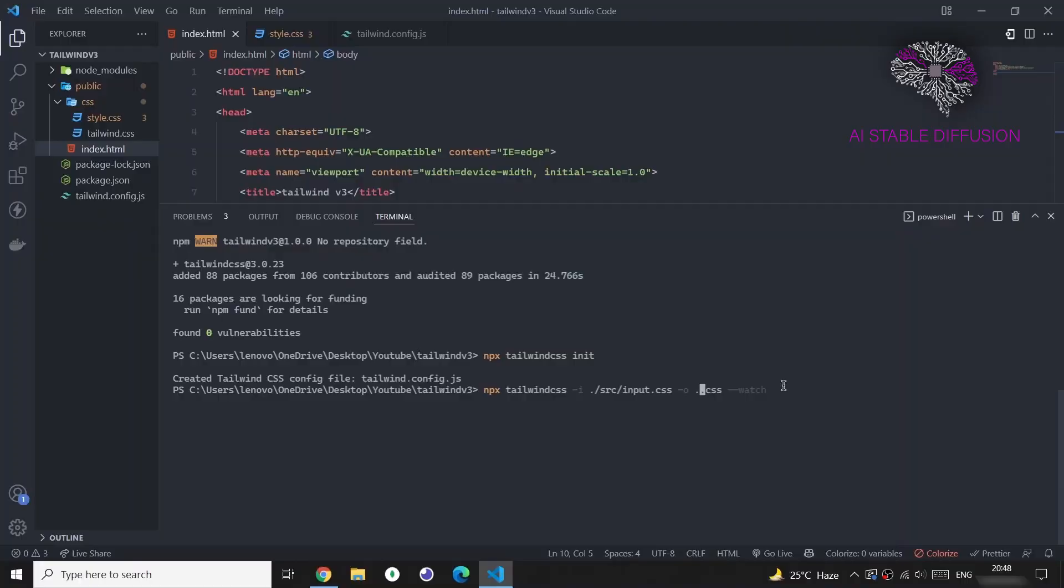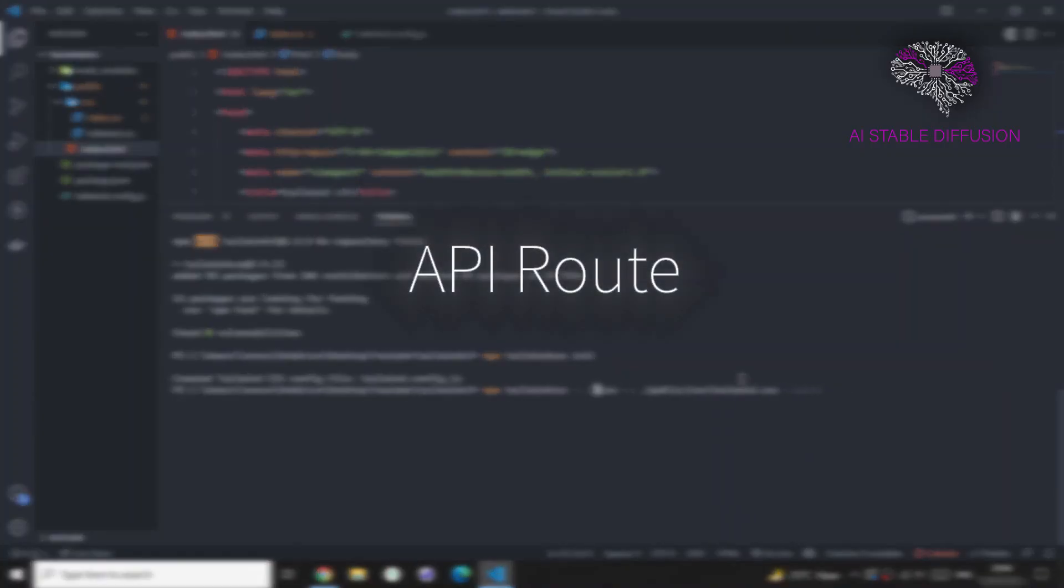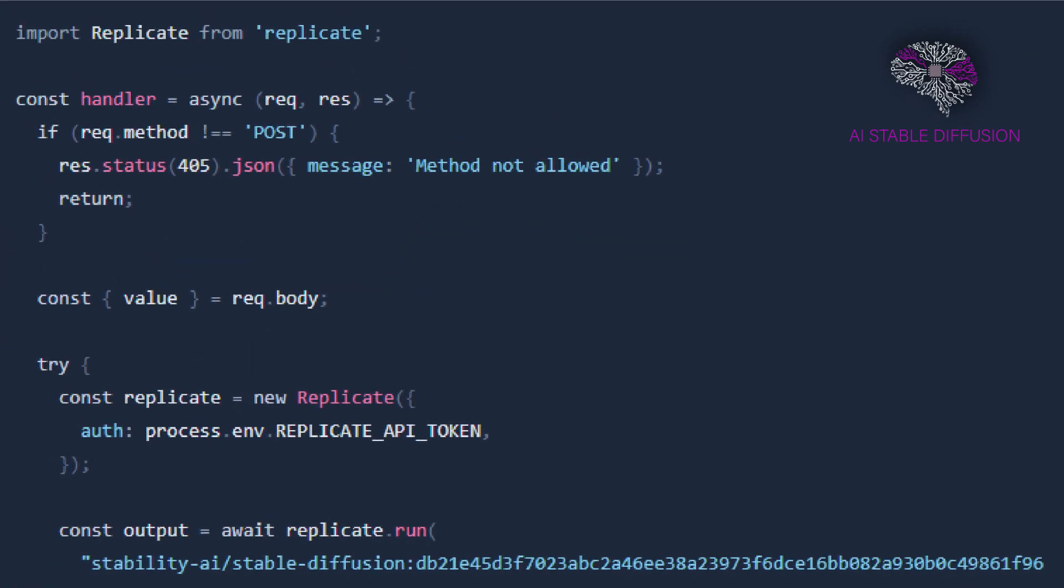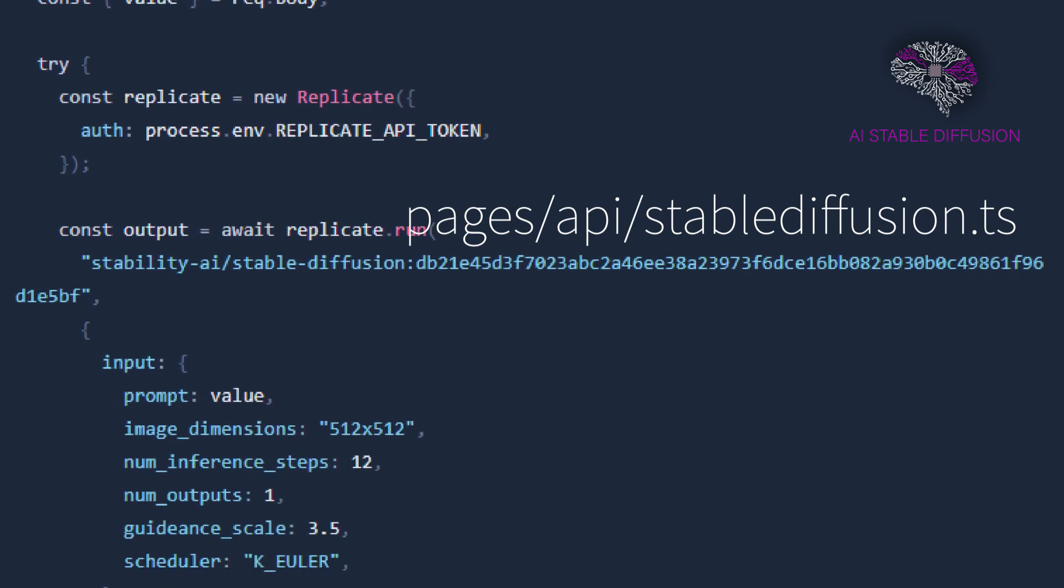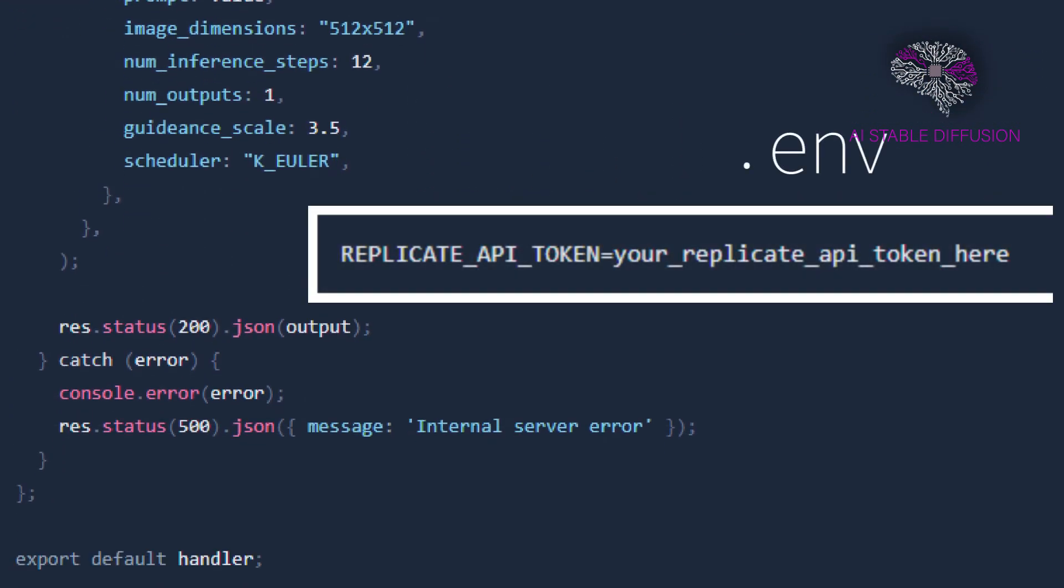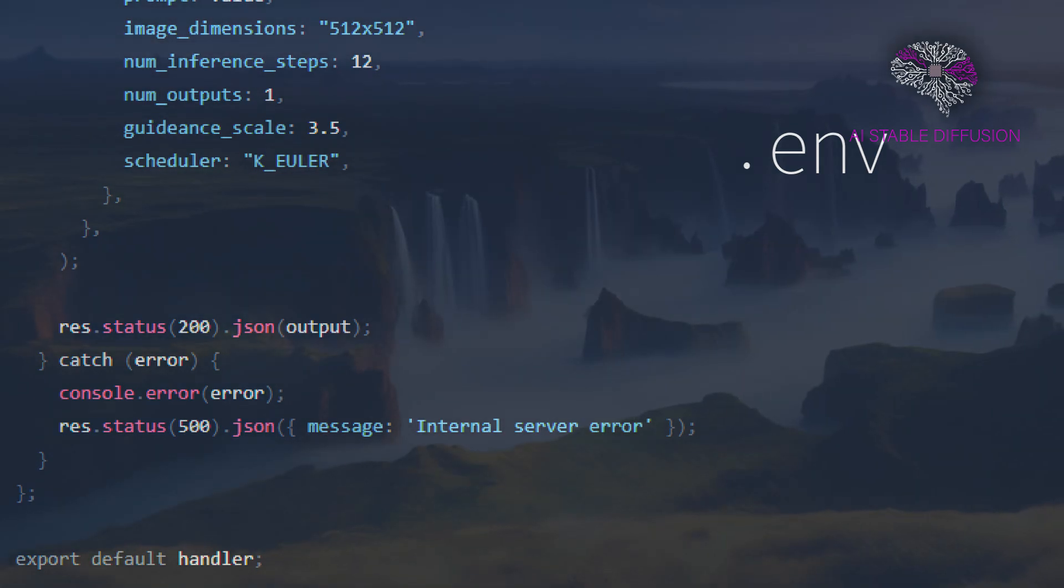Our next step is to create the Stable Diffusion API route. To handle the generation of Stable Diffusion images, we need to develop an API route by adding the following code to a new file called pages forward slash API forward slash Stable Diffusion dot ts. Ensure that the .env file has your replicate API token. Requests from the front end to create images using the Stable Diffusion model will be handled by this API endpoint.